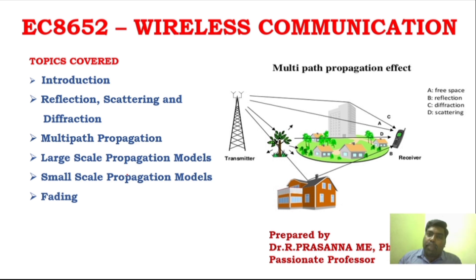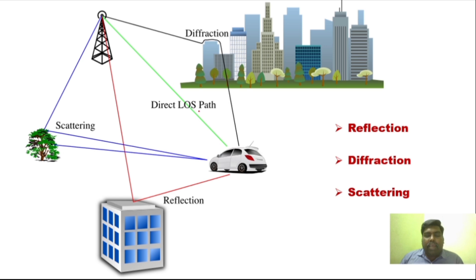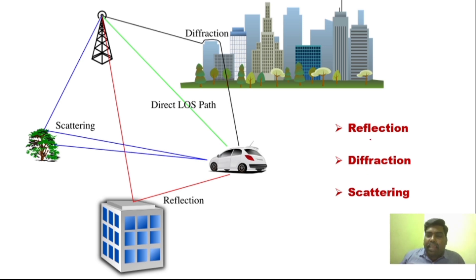First, we will start with electromagnetic propagation. In Unit 1, you have to understand the concept of multipath propagation. Multipath propagation is a problem, and for that, you have to understand how electromagnetic waves propagate. Electromagnetic waves propagate with these three main aspects: reflection, diffraction, and scattering.